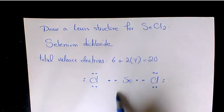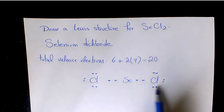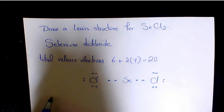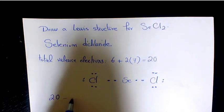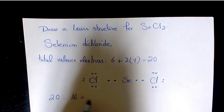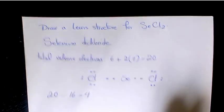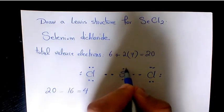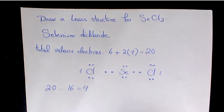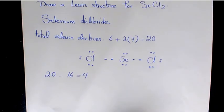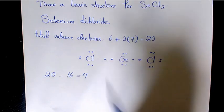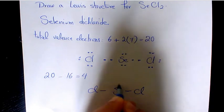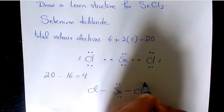So we have two, four, six, eight, ten, twelve, fourteen, and sixteen, so it's going to be 20 minus 16, which equals four. The rest of it, four electrons, we need to place on selenium. And at the end we need to place dashes between the selenium and chlorine. So this is going to be my Lewis structure for selenium dichloride.